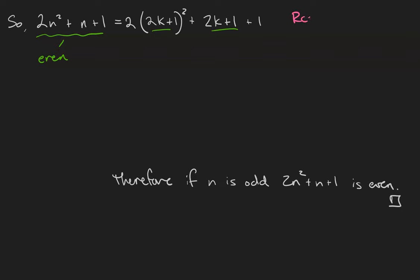Remember, even means 2 times an integer m. So what I want to do is prove that I can write this expression as 2 times something that's an integer. An integer might be a sum or a product or a power of other integers.